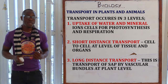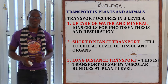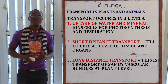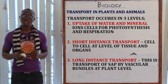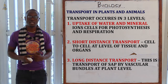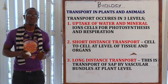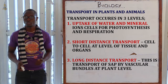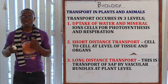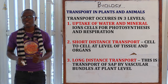Transportation in plants happens at three levels. First is the uptake of water and mineral ions, which is mainly concerned with photosynthesis and respiration. The next level is short-distance transport, which involves cell-to-cell movement at the level of tissue and organs. The last level is long-distance transport, which is the transport of sap by the vascular bundles at the plant level.